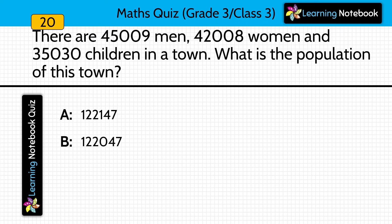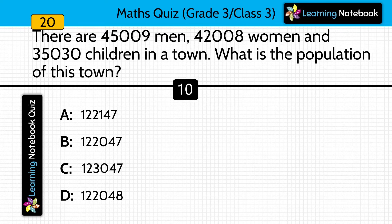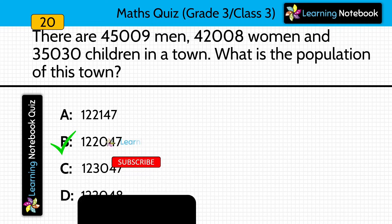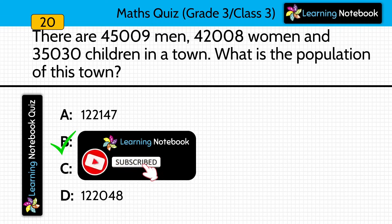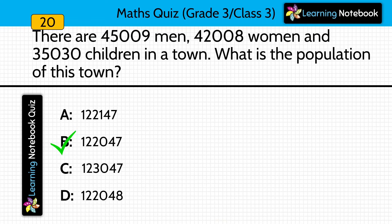Question nineteen: there are 45,009 men, 42,008 women and 35,030 children in a town. What is the population of this town? Answer is option B. You will add these three numbers and get the answer as 1,22,047.